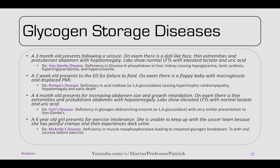Type 5, McArdle's disease: a six-year-old girl presents with exercise intolerance, unable to keep up with her soccer team due to painful muscle cramps and dark urine. It's a deficiency in muscle myophosphorylase, leading to impaired glycogen breakdown. Treatment is oral sucrose before exercise.